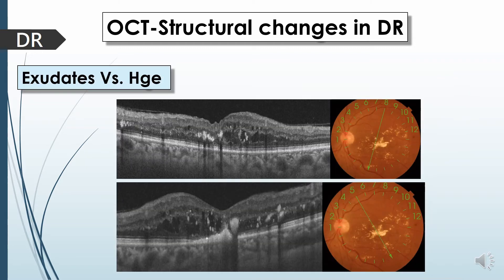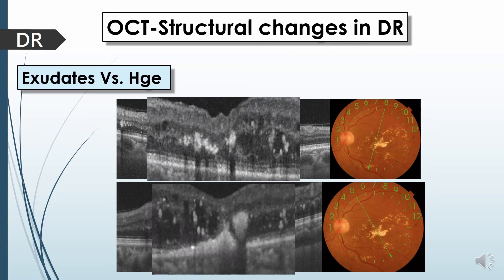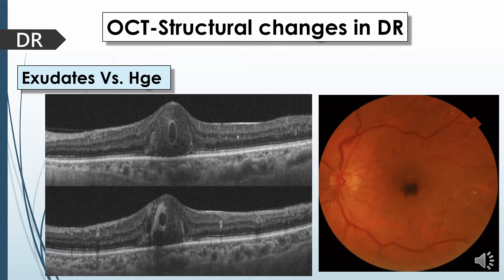Hard exudates appear as hyperreflective material deposited in the inner and middle retina; however, in some cases they are deposited at the outer retina, which carries a poor prognostic value due to loss of the outer retinal cells. Retinal hemorrhages appear as hyperreflective or moderately reflective material deposited in the inner retina; however, in selected cases they may involve the whole fovea, and we should return to the color photos for proper differentiation between hemorrhages and exudates.